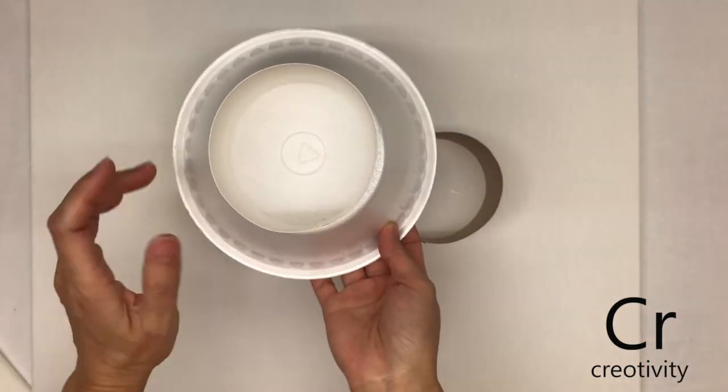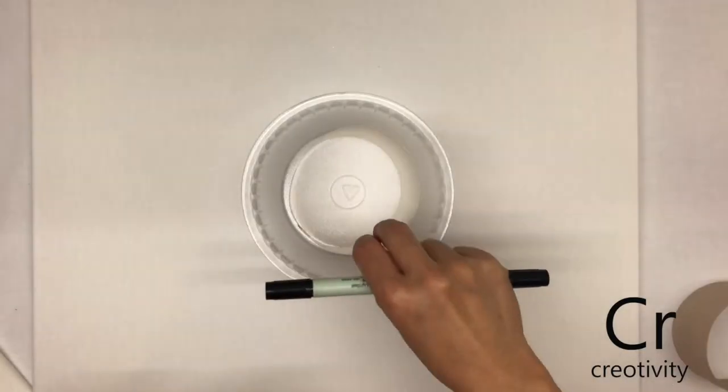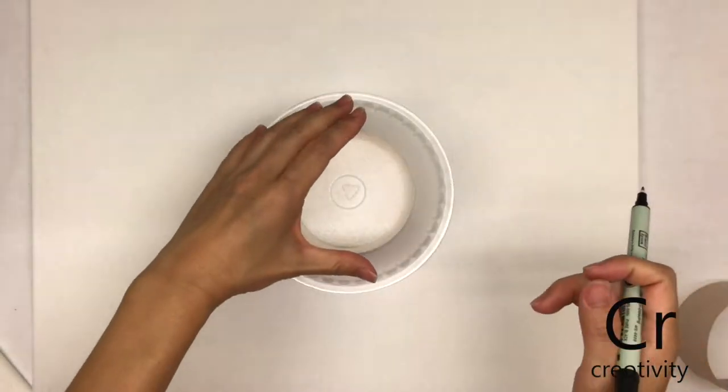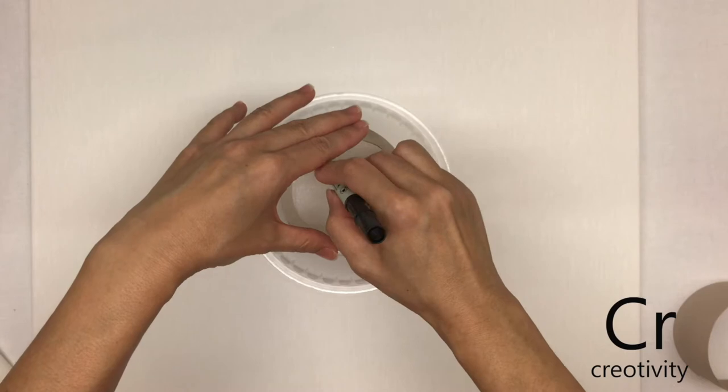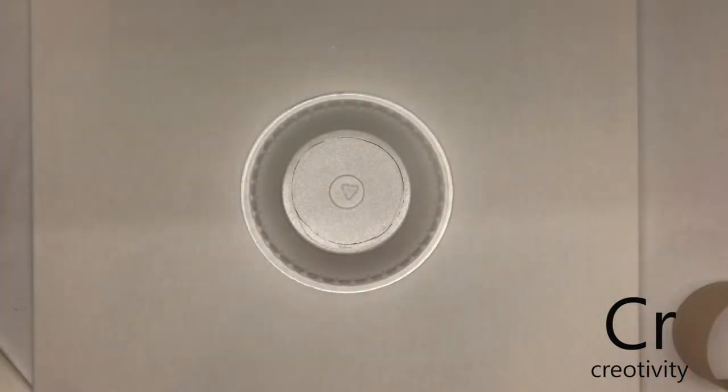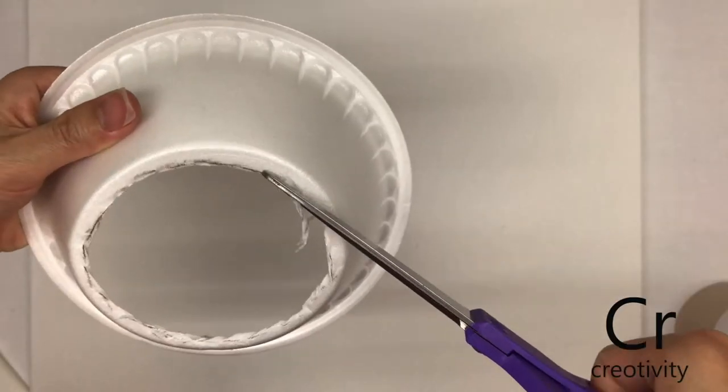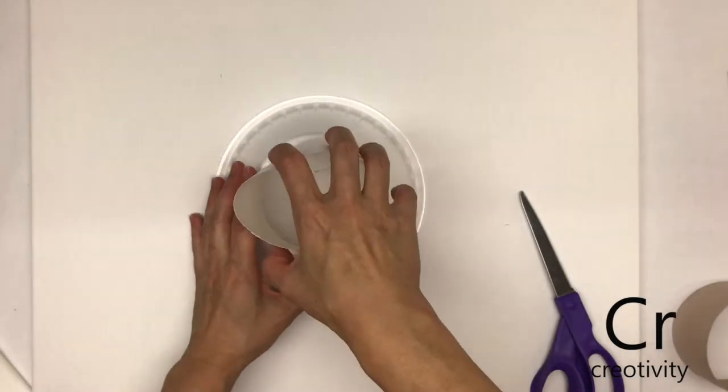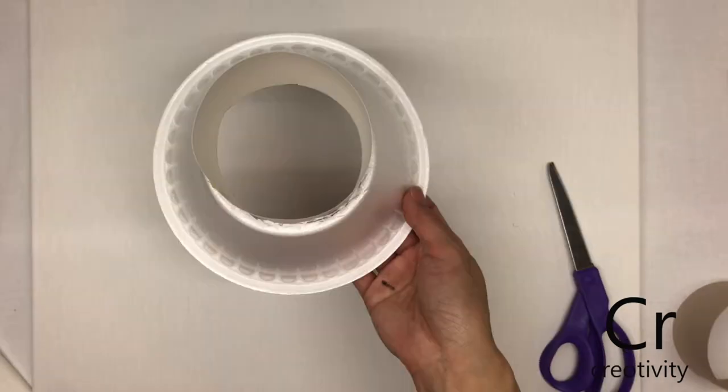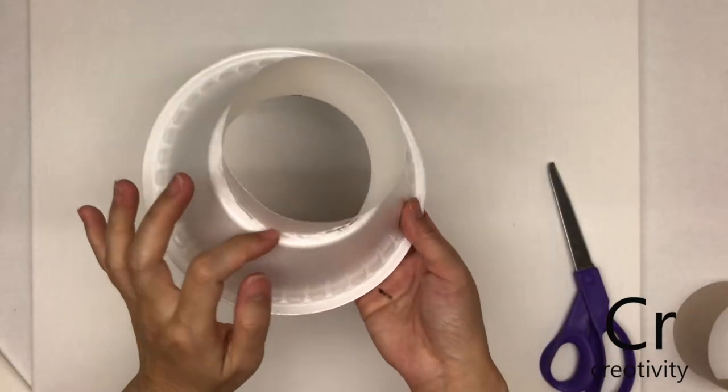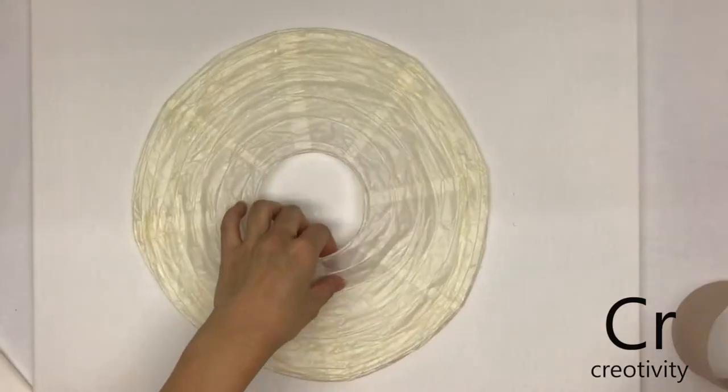Place the white circle on the bottom of the bowl, center it, trace it, and then cut it out. Insert the white circle into the cutout just to see if it fits, but we're not gonna glue it yet.